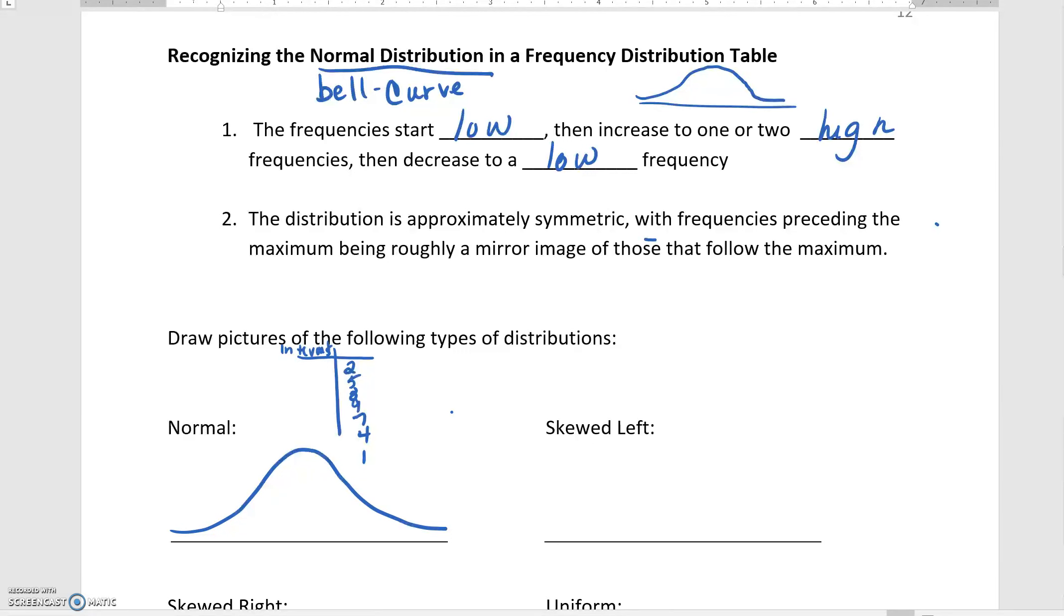Now many distributions will not be normal, meaning we could have high values at the beginning and go down to low values, or we could start low and go high.